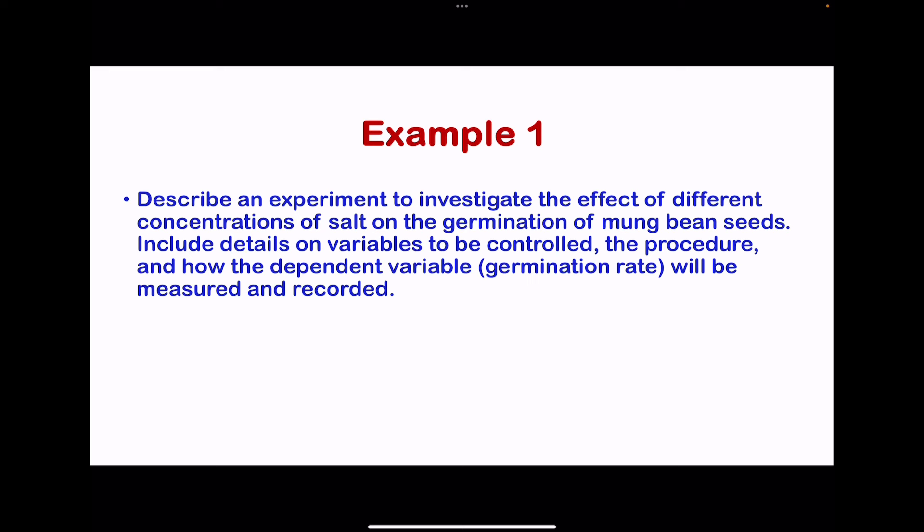The beans should be of the same species and age, and the same number should be placed on all petri dishes. Repeat the experiment at each concentration of salt and calculate the mean. Count the number of mung beans that have germinated within a certain time, such as a week. Keep temperature, light intensity, water availability, and seed quality the same. Calculate the germination rate as a percentage of seeds germinated in each dish, and draw a table with columns for salt concentration, germination rate, and means.